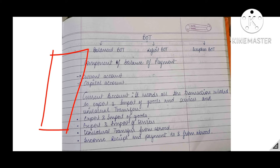The second item is exports and imports of services, which is equivalent to your invisible trade. So all invisible goods or services are included in the current account. For example, shipping-related activity, insurance, banking — all these services at an international level are included in the current account.